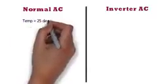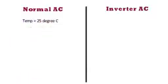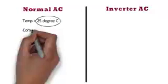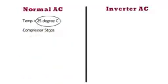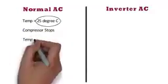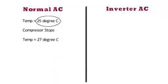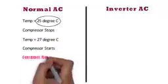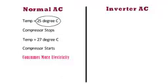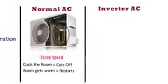For example, if you set a 25-degree temperature and 25 degrees is soon achieved, the compressor in the outdoor unit completely stops. Again, when the temperature rises to 27 degrees, it starts at a fixed speed to achieve the set temperature, so it consumes more electricity.